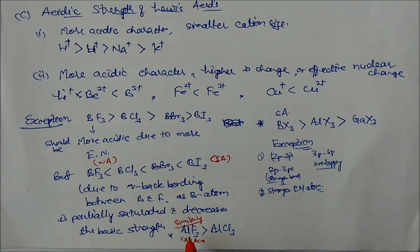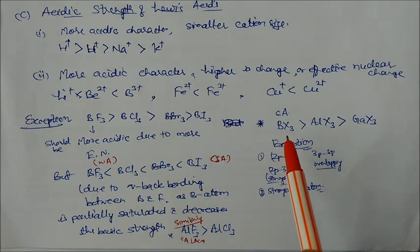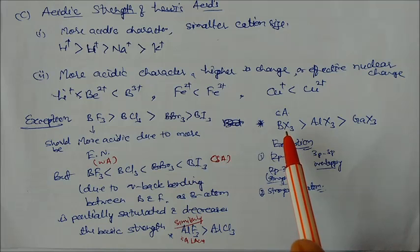Similarly, it happens with AlF3. So AlF3 is the strong acid, more than AlCl3. So just try for this answer: why is AlF3 the stronger Lewis acid than this one, AlCl3? But we are using AlCl3 normally as a catalyst, not AlF3. So this I am leaving for you, just try to get answers.